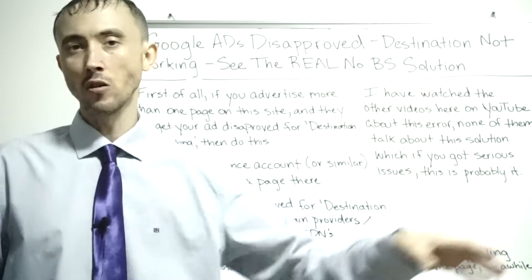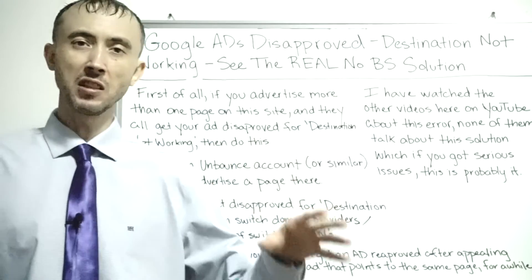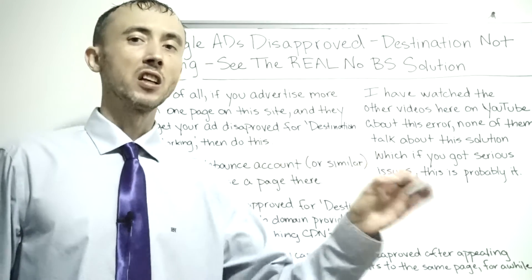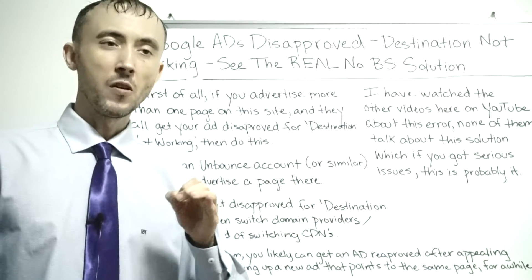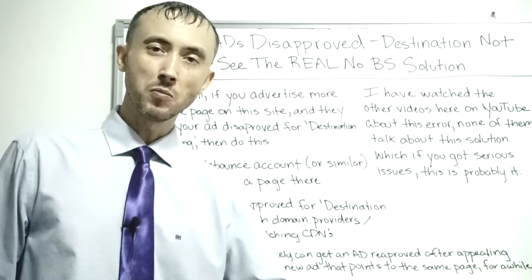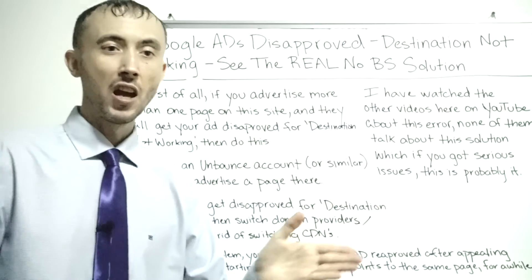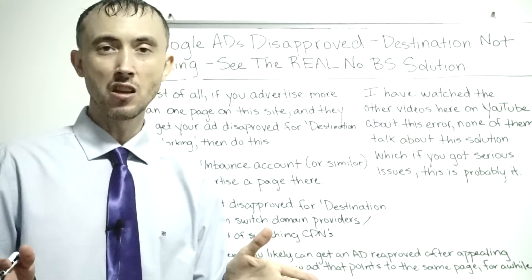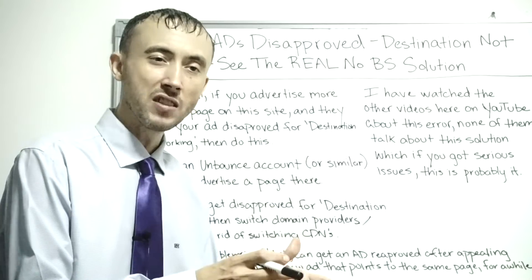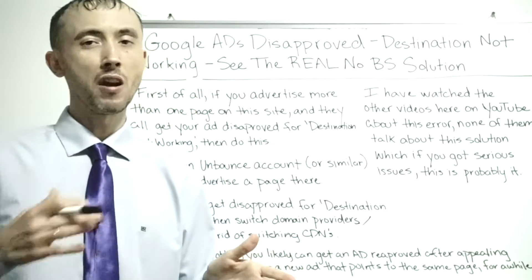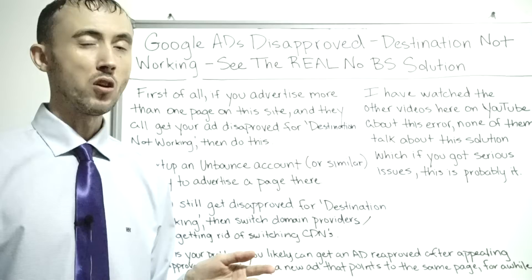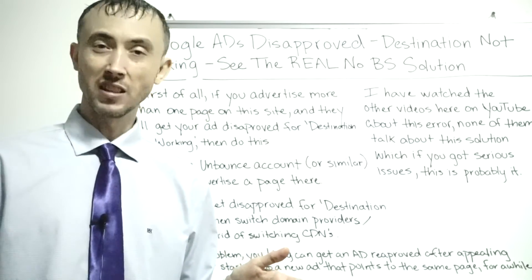If Google consistently sends users to broken pages, people will distrust clicking on ads, and Google will lose long-term revenue from Google Ads. So they've built a system to ensure the best user experience. If the domain registrar fails even once, Google disapproves the ad. It doesn't re-check later and magically re-approve it — once the page is flagged as down, the ad stays disapproved until you appeal or create a new ad.